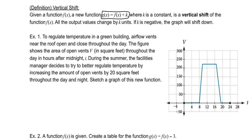Example one: to regulate temperature in a green building, airflow vents near the roof open and close throughout the day. The figure shows the area of open vents in square feet throughout the day in hours after midnight. During the summer, the facilities manager decides to better regulate temperature by increasing the amount of open vents by 20 square feet throughout the day. Sketch a graph of this new function.